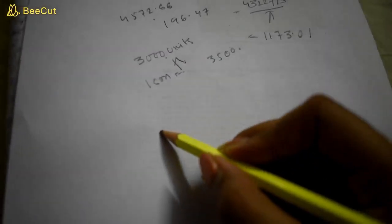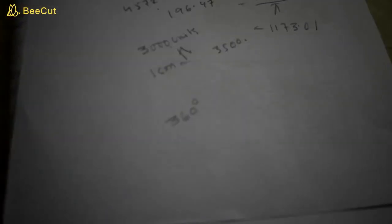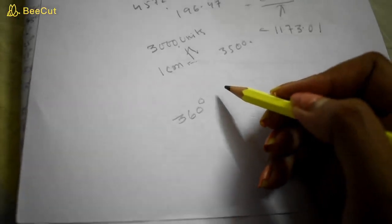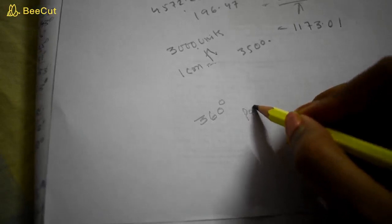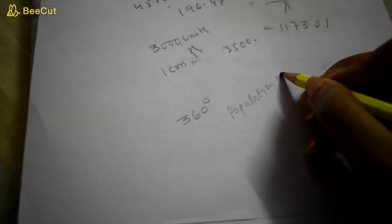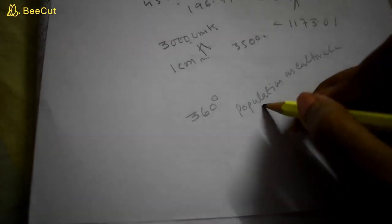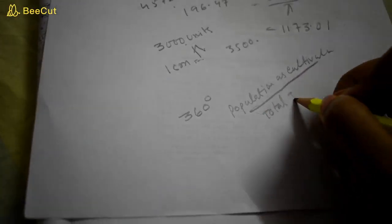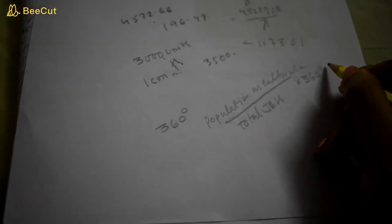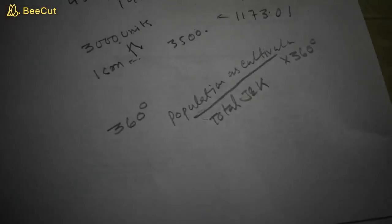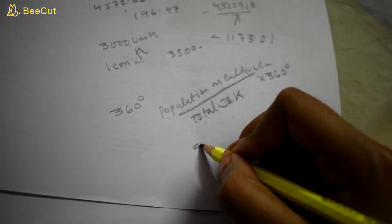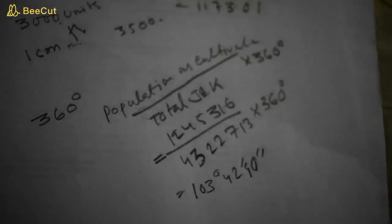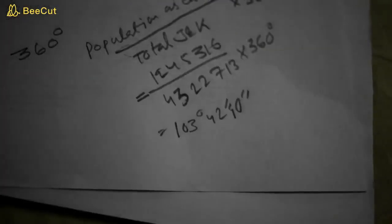The whole circle is 360 degrees. To get the degree for each group, we need to calculate individual sectors. For example, the population of cultivators divided by the total population of Jammu and Kashmir, multiplied by 360 degrees. After putting the population amount into the formula, we get the degree values. Now we will draw the divided proportional circles.